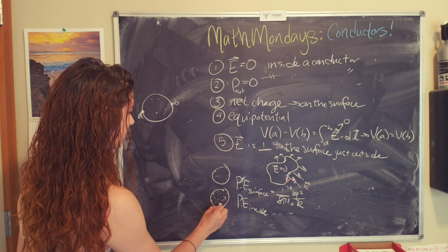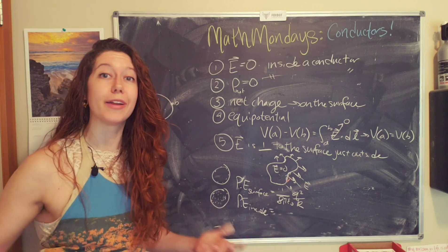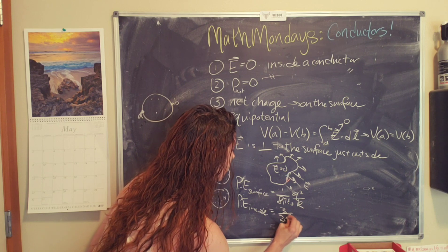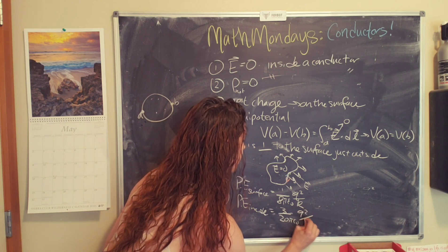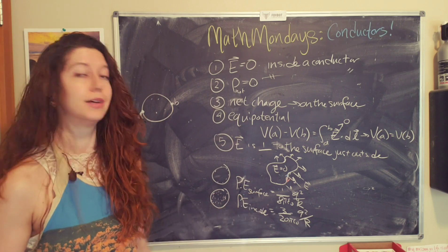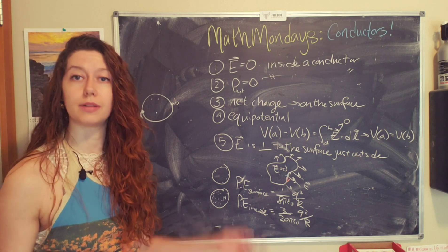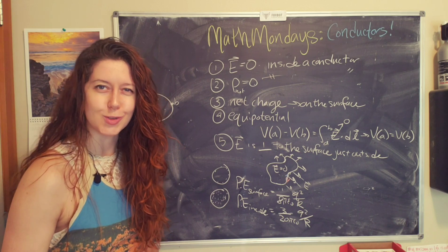It turns out that the potential energy of this configuration is 3 over 20 pi epsilon naught q squared over r. And so the surface potential energy is less than the potential energy inside. And so the electrons, they don't even need to think about it. They just do it because they want to be lazy and minimize their energy.